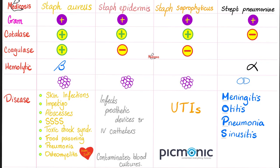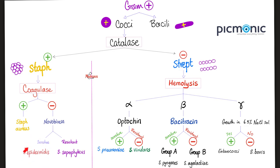Staph epidermidis is gram-positive, catalase-positive, coagulase-negative, and since it's a staph, it clusters like grapes. It infects prosthetic devices and IV catheters, and it may contaminate blood cultures.